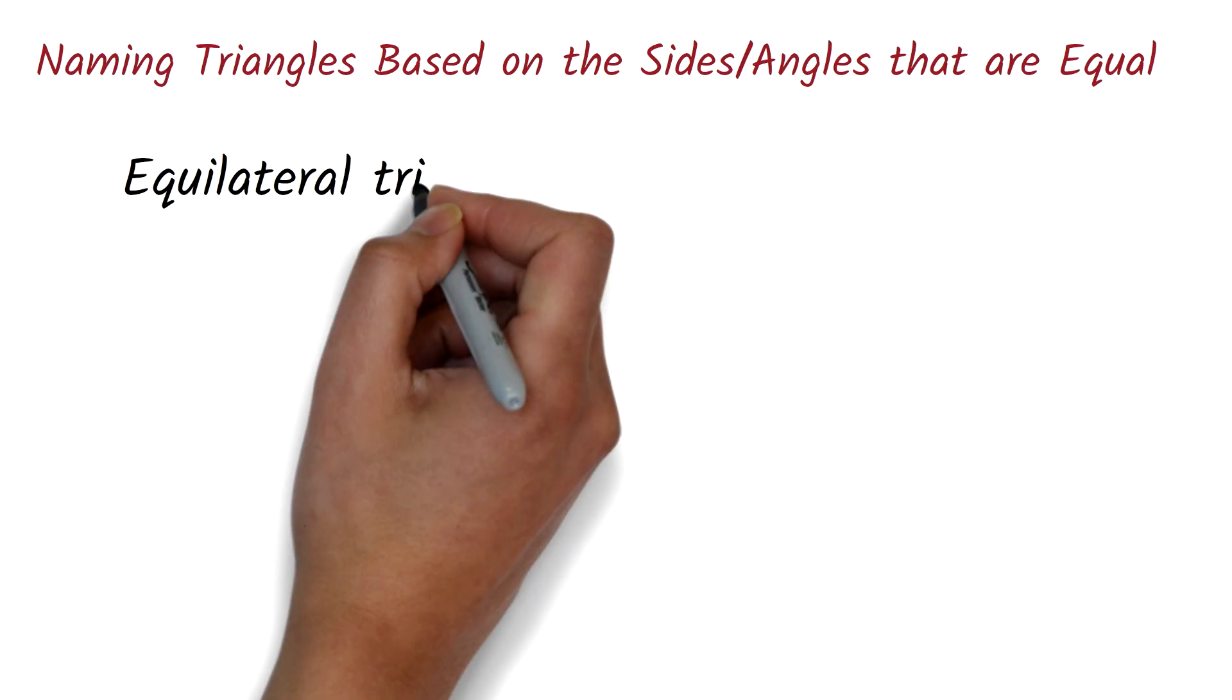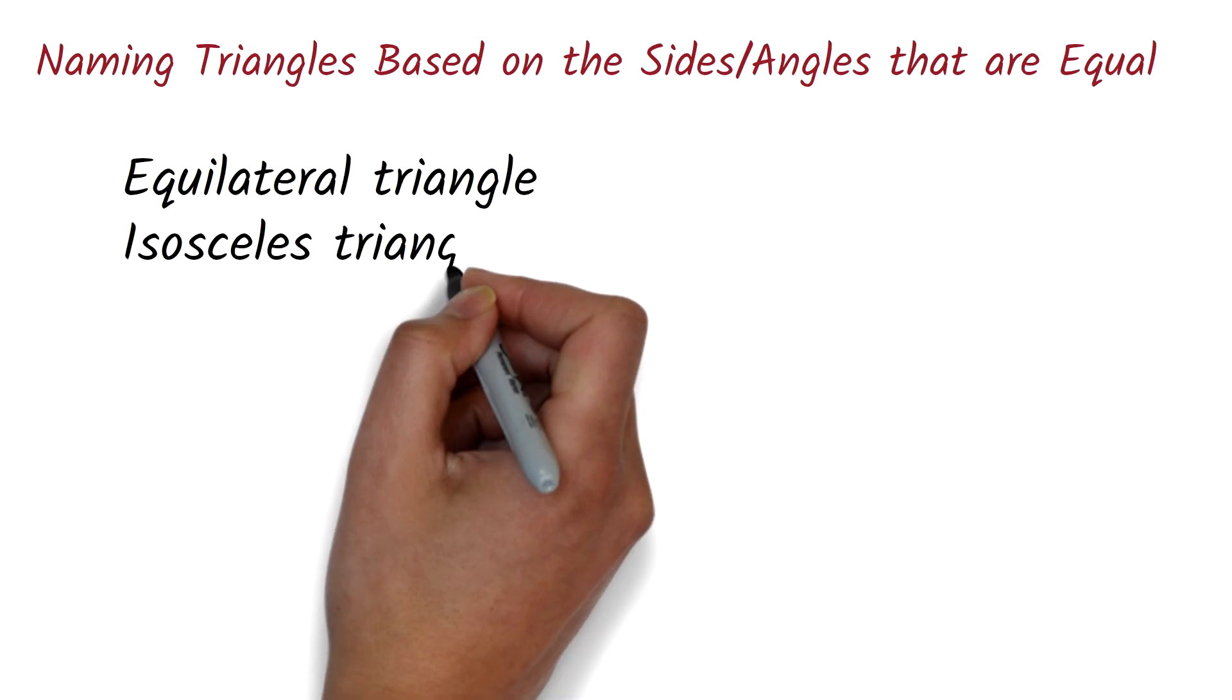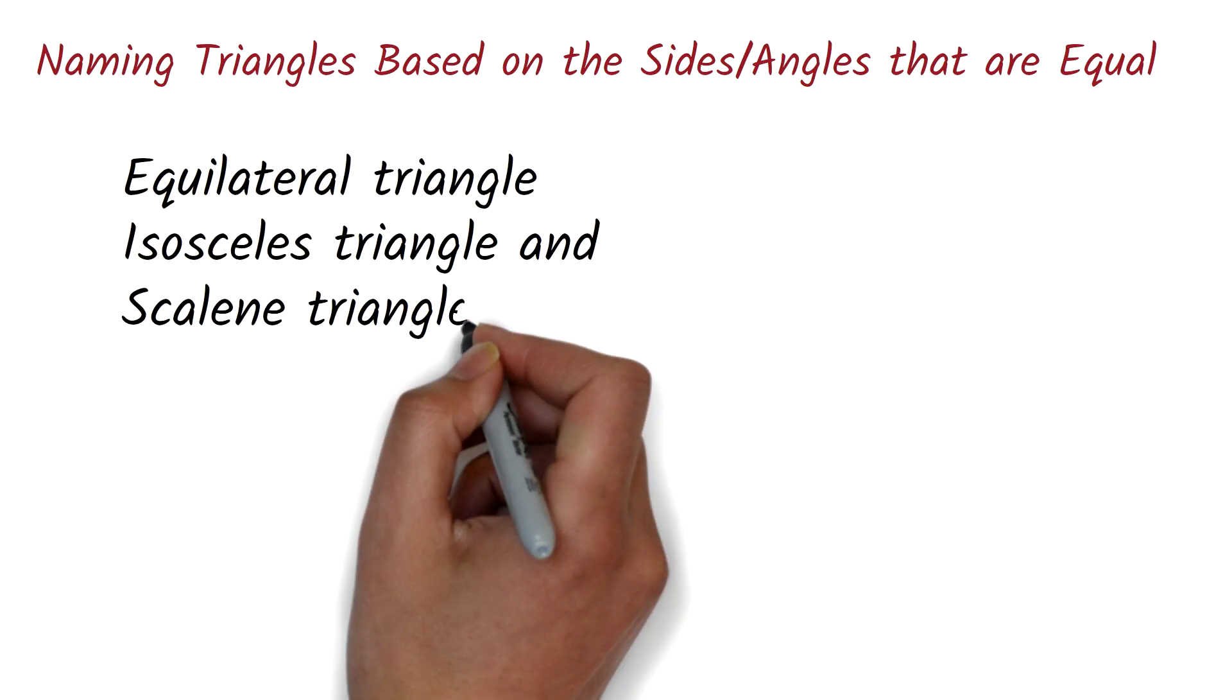There are several ways of naming triangles. We can name a triangle based on the number of sides or angles that are equal. These are equilateral triangle, isosceles triangle, and scalene triangle.